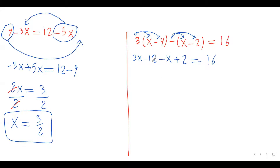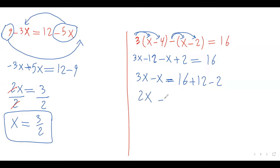Move all variable terms to one side and all constants to the other. On the left I have 3x and minus x. On the right I have 16. Moving the constant negative 12 to the right side it becomes positive 12, and moving positive 2 to the right side it becomes negative 2. Combining like terms: 3x minus x is 2x, equals 16 plus 12 minus 2. That's 26. So 2x equals 26. Divide both sides by 2 — this 2 cancels that 2 — giving x equals 26 divided by 2, which is 13. This is our answer.